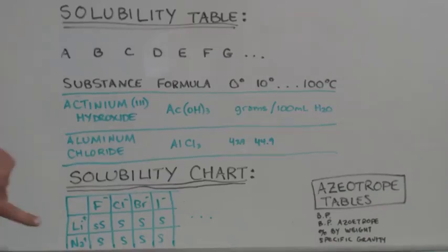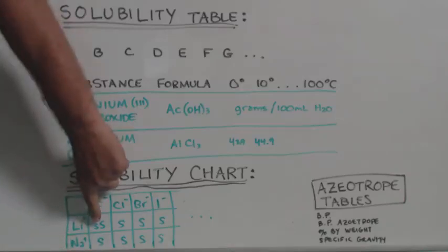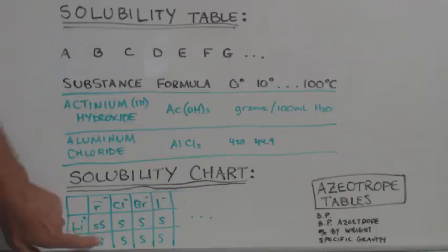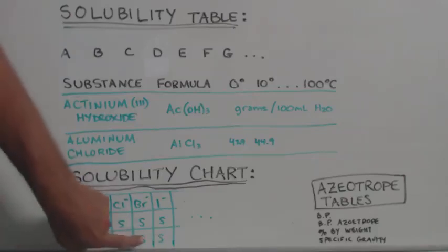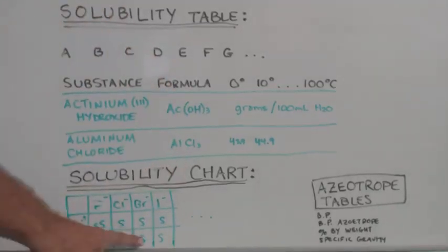And then, like, looky here. You got lithium. You have fluoride. Right where they go, there's an S-S. It'll tell you. It's just a little paragraph tells you what the letters are for. S-S is most likely slightly soluble. S would be soluble. But you can see sodium.